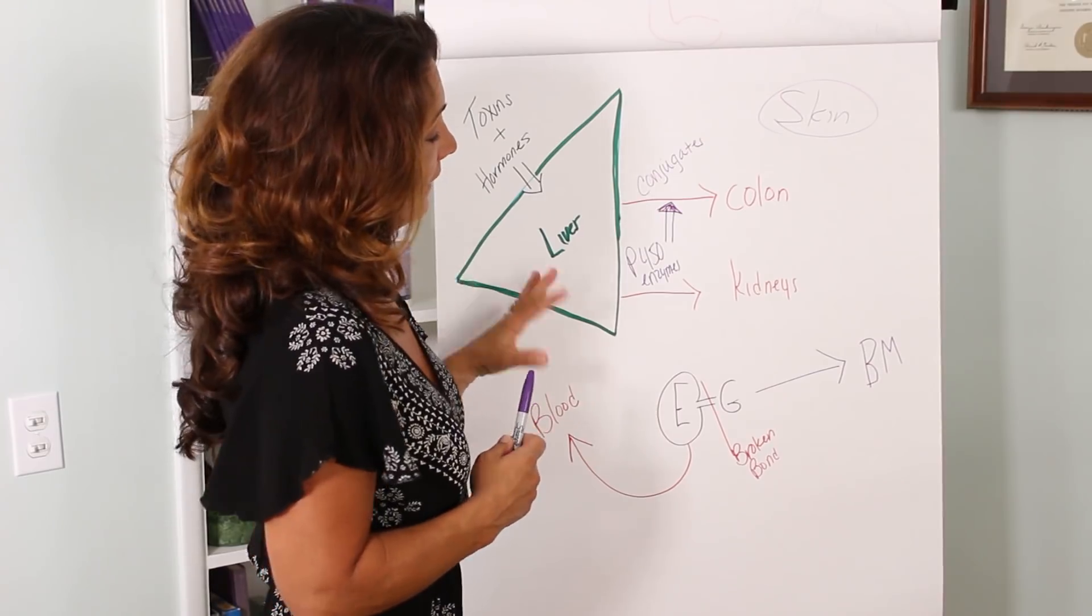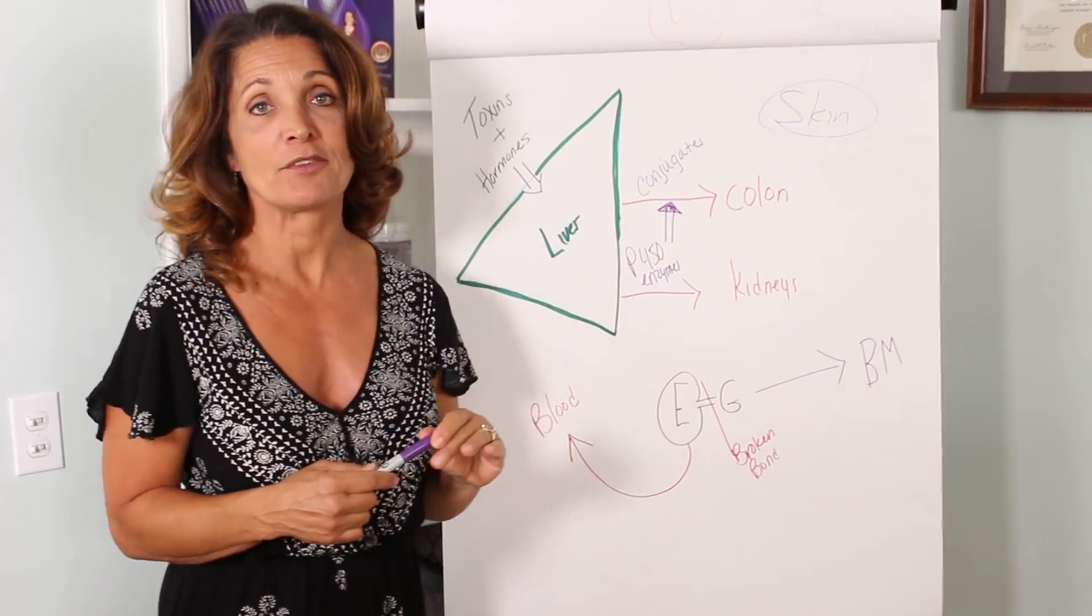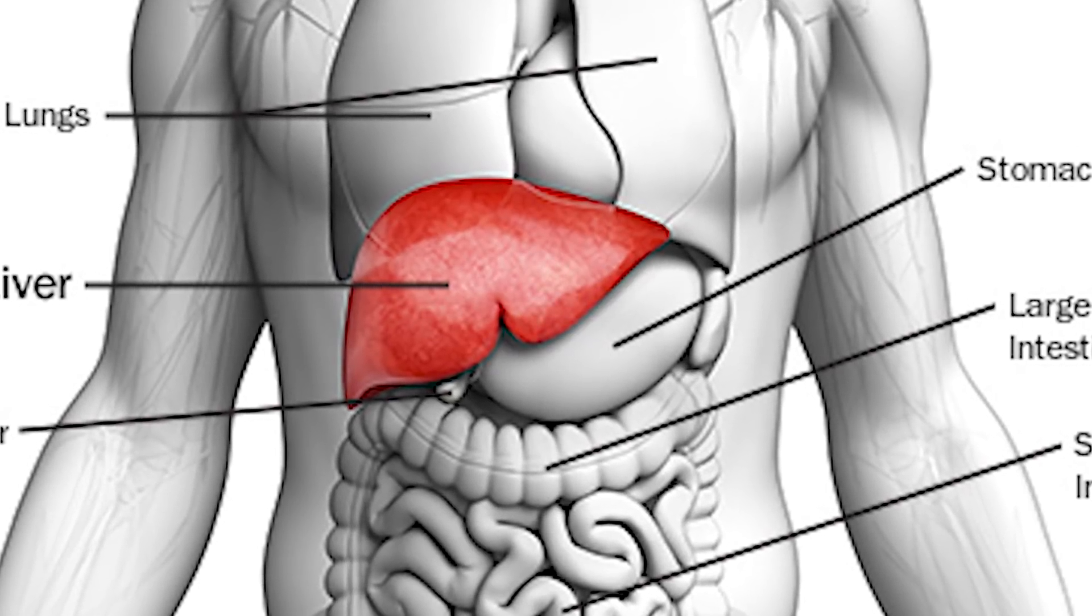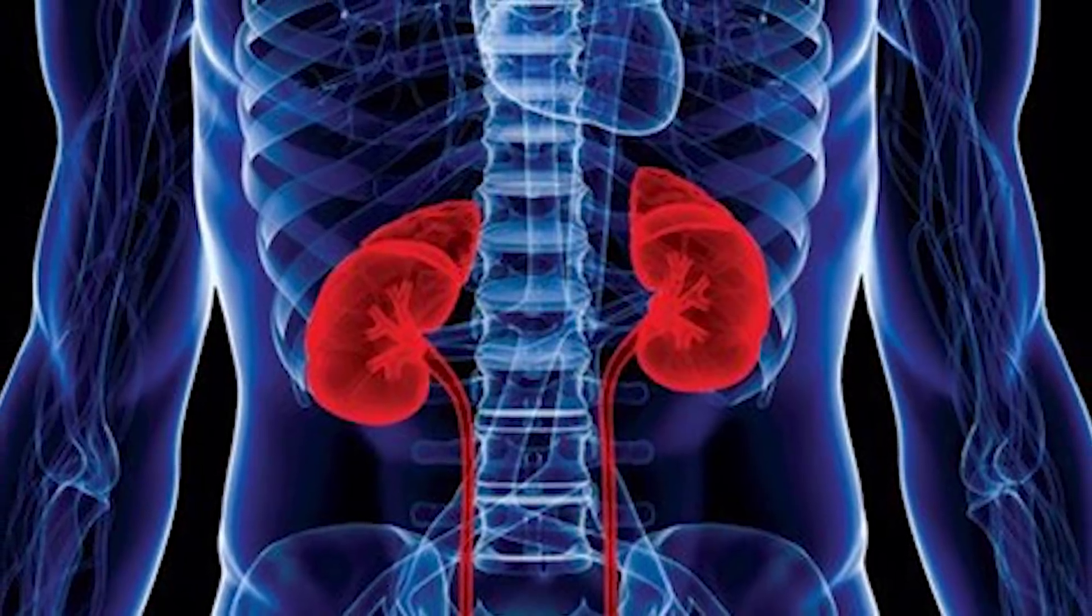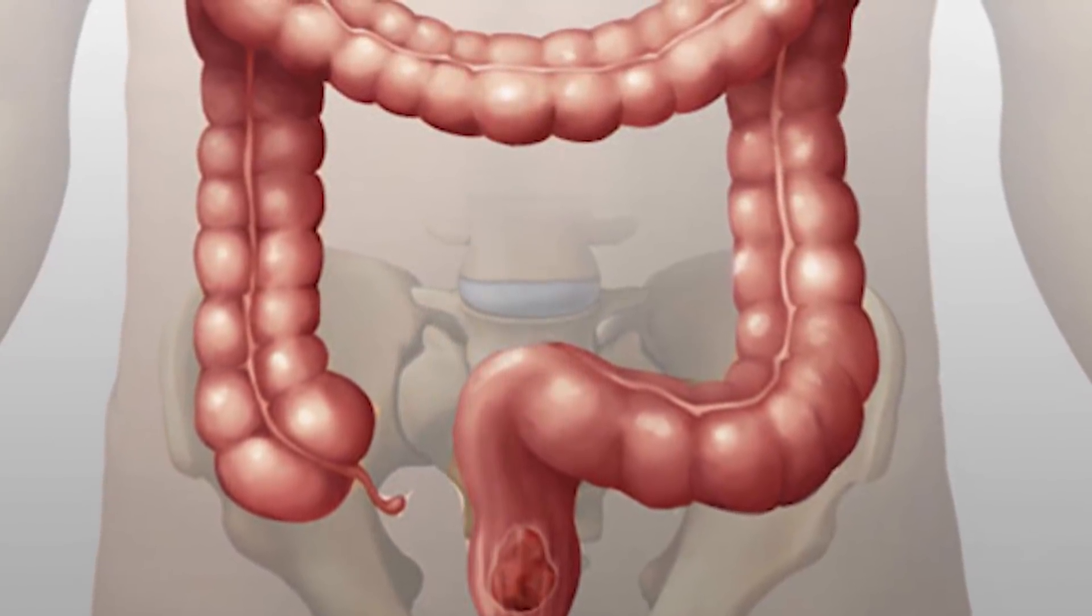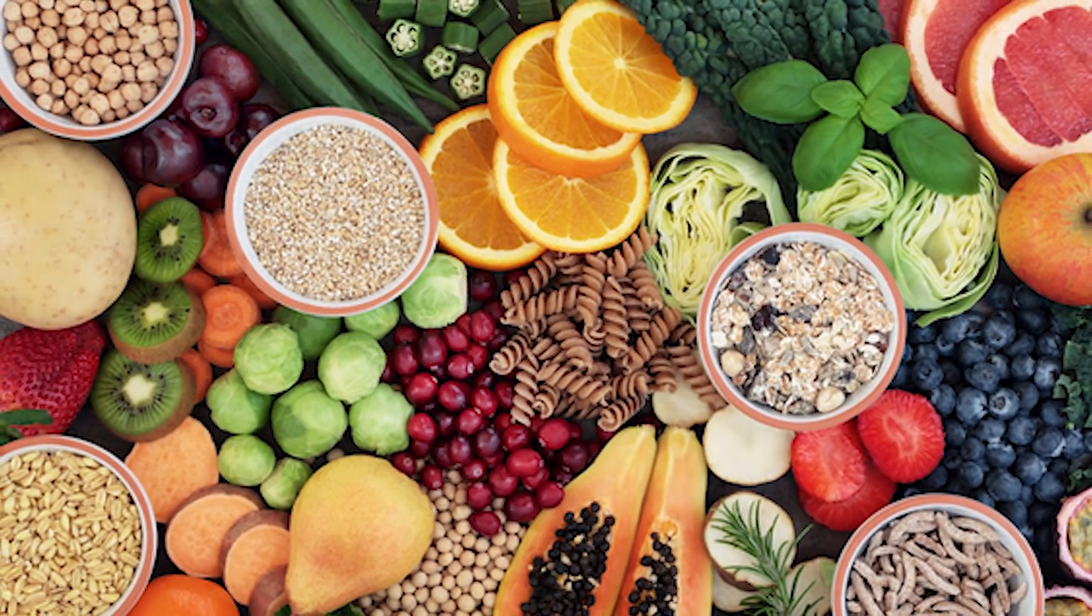So I would just want to point out that the detoxification pathways are super important to your hormonal health. And if you can keep your liver clean and your kidney flushed out and your colon running well, remember with your colon, lots of fiber, lots of water, then you're going to have much healthier hormone metabolism and healthier hormone levels.